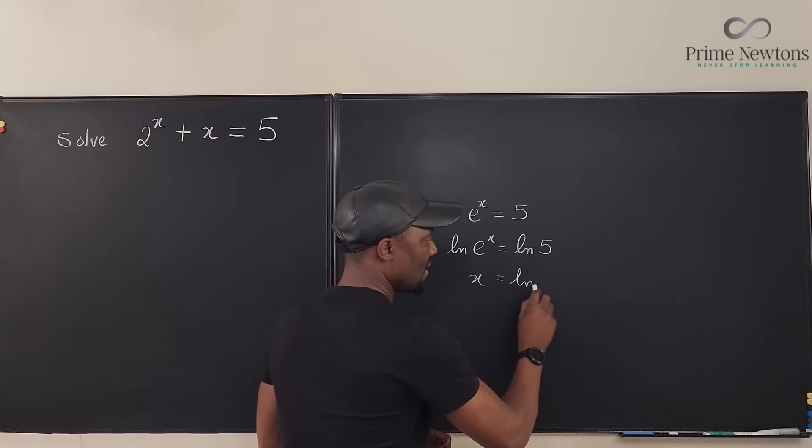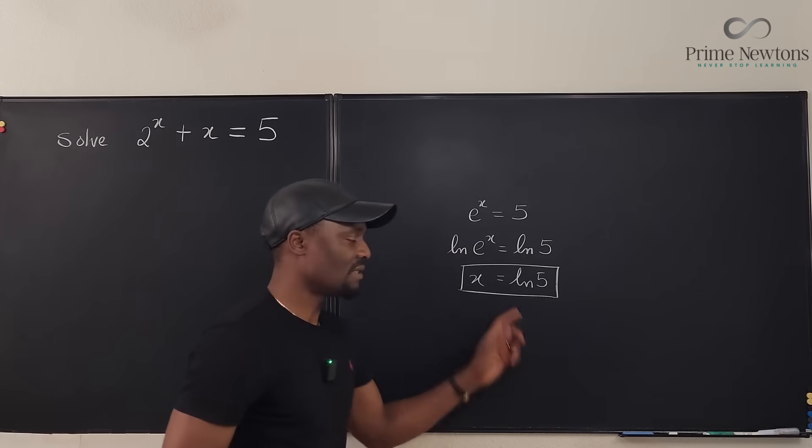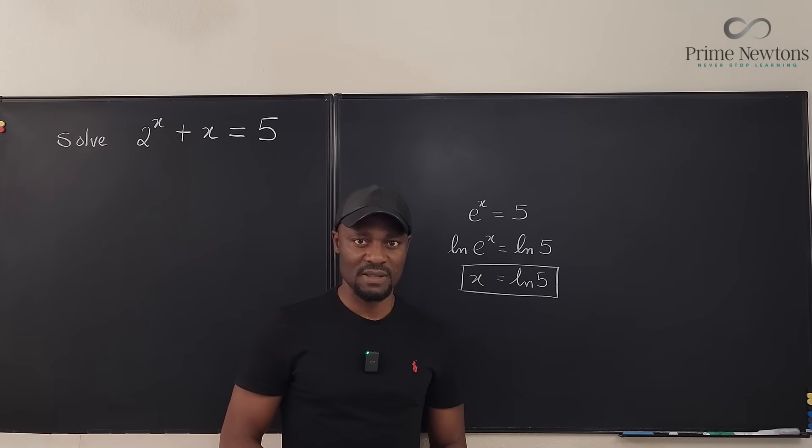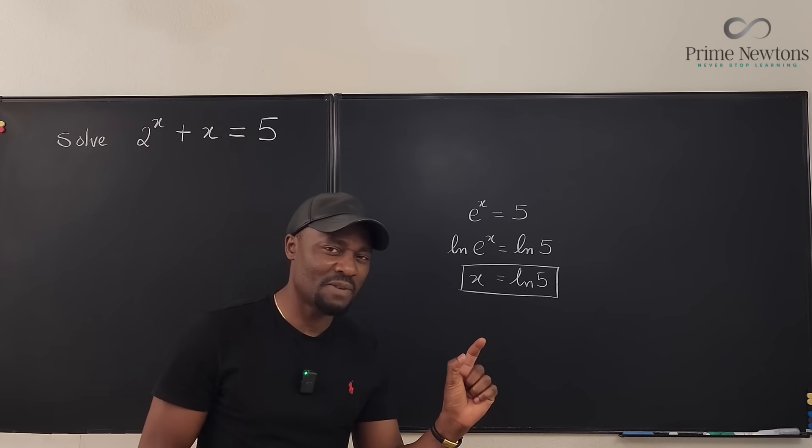And then you can say that this is x, because this undoes e, because these are inverse functions. Natural log of e of anything is just that thing, so x = ln(5). Will I be correct to box this and say this is my final answer? The answer is yes.